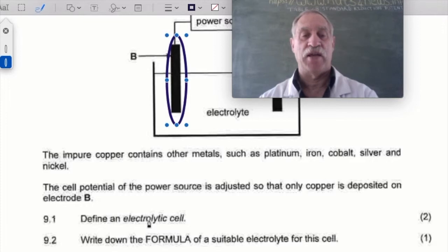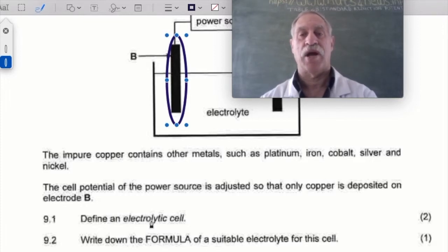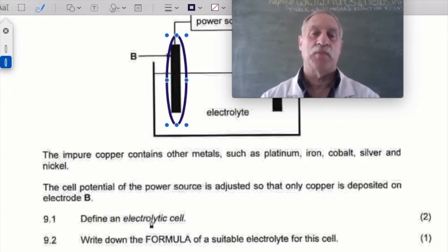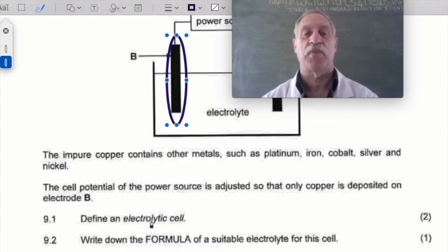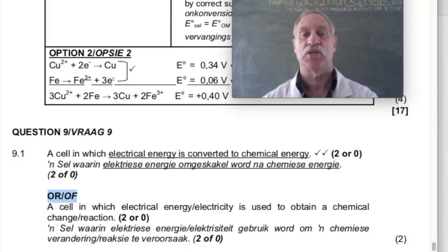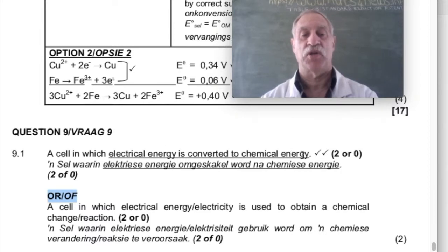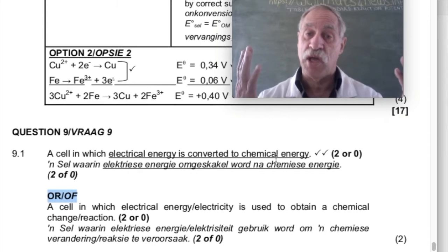Now it says: define an electrolytic cell. My suggestion is to get hold of the memo and memorize it, then come back to the question. So here's the memo: an electrolytic cell is a cell in which electrical energy is converted to chemical energy. Can you memorize it? Sure you can.